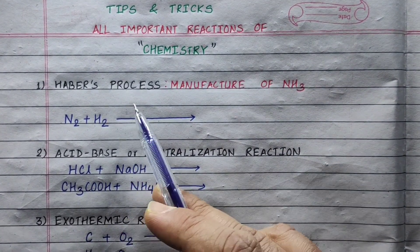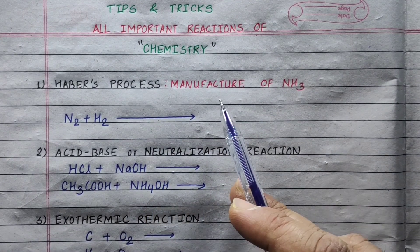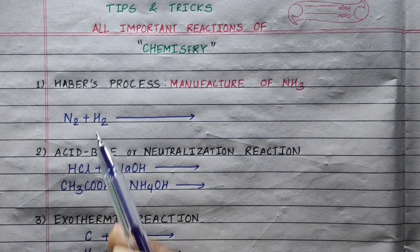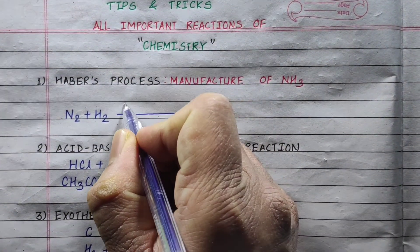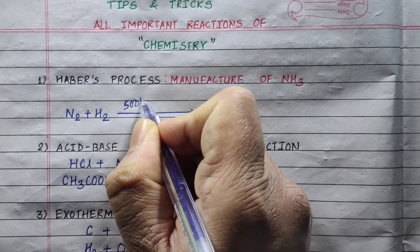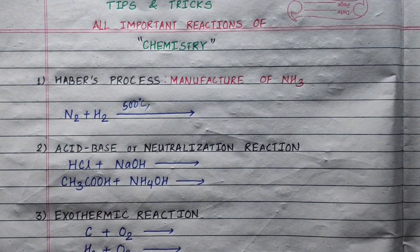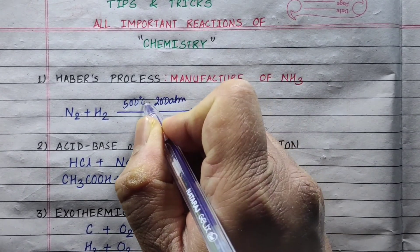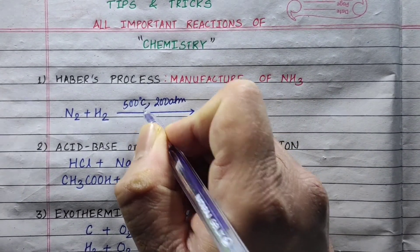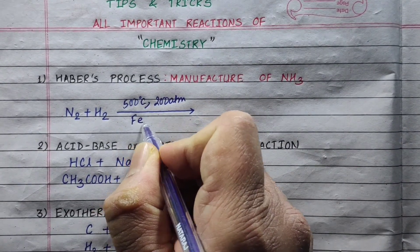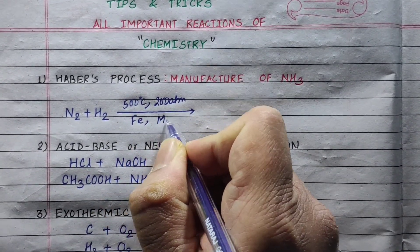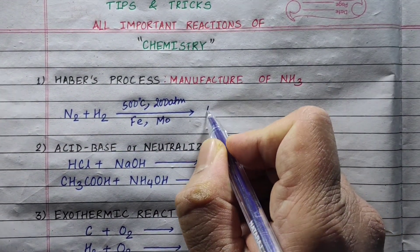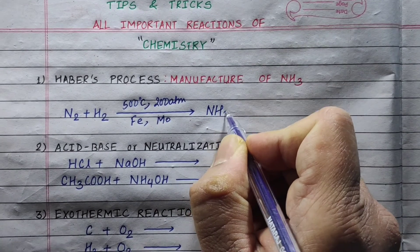First, the Haber process. This is the manufacturing of ammonia gas reaction. It uses nitrogen and hydrogen. We need to heat to 500 degrees Celsius and 200 atmospheres of pressure. Iron is used as a positive catalyst and molybdenum as a promoter. The product is ammonia, NH₃.